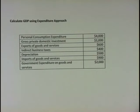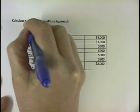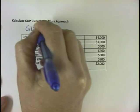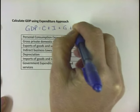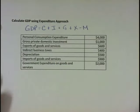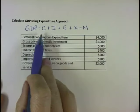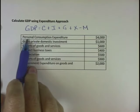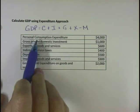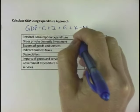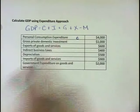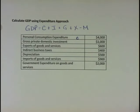For this we want to figure out how to calculate gross domestic product using the expenditure approach. The expenditure approach says GDP equals C plus I plus G plus X minus M. The C is consumption, or as the government calls it, personal consumption expenditures — you might see it in the news as PCE. We're going to call that just consumption, the consumption component of the expenditure approach.